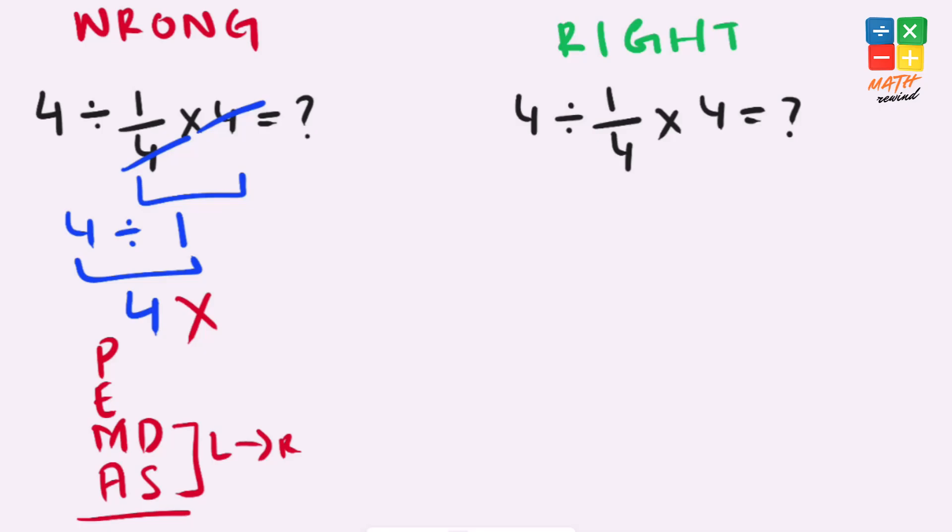Now let's rewind and solve this problem the right way. If you notice, in this expression we have division and we have multiplication operators present. According to the rules, multiplication and division have equal priority, so we must work from left to right.